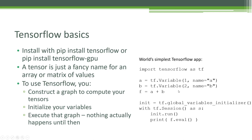Let's take a look at the world's simplest TensorFlow application — all it does is add one plus two together, but it's a good illustrative example of what's actually going on under the hood. We start by importing the TensorFlow library, referred to as TF. We say A equals TF dot variable, value one, name equals A — that sets up a variable object in TensorFlow containing the single value one, going by the name A.